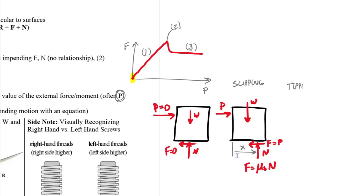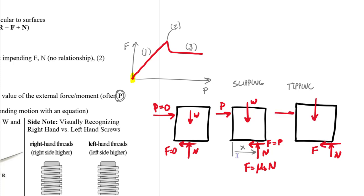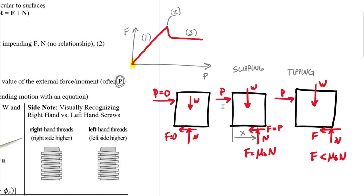For tipping, we move the normal force all the way to the far corner — if something tips, it tips onto that corner. At tipping, we are in the static but not impending motion range, so F must be less than mu_s * N. To compare slipping versus tipping, solve for the force P required to slip and the force P required to tip; whichever P is smaller controls and causes motion first.